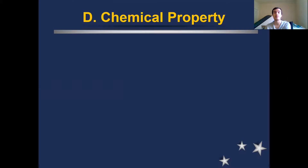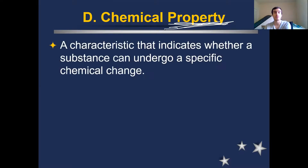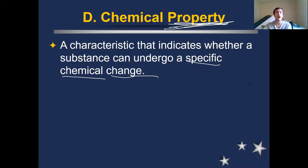Something that describes whether or not a particular substance is going to go through a chemical change is called its chemical property. Just like physical properties can describe characteristics of a substance, chemical properties describe how likely a substance is to go through a chemical change — whether it's likely to burn up, give off gas when it hits water, or rust and react with oxygen.